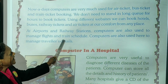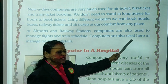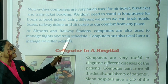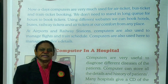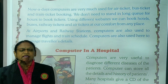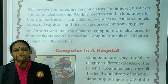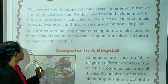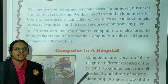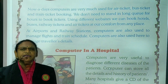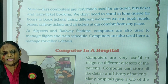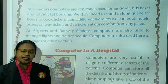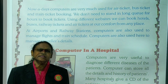At airports and railway stations, computers are also used to manage flights and train schedules. If we want to see train timings or aeroplane timings, we can see that with the help of a computer. Computers are also used to manage travellers' details — when we book tickets, our name, age, and all details are saved in the computer.